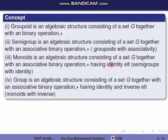A group with associativity is a semigroup. A monoid is a semigroup with identity. A group is a semigroup with identity and inverse.